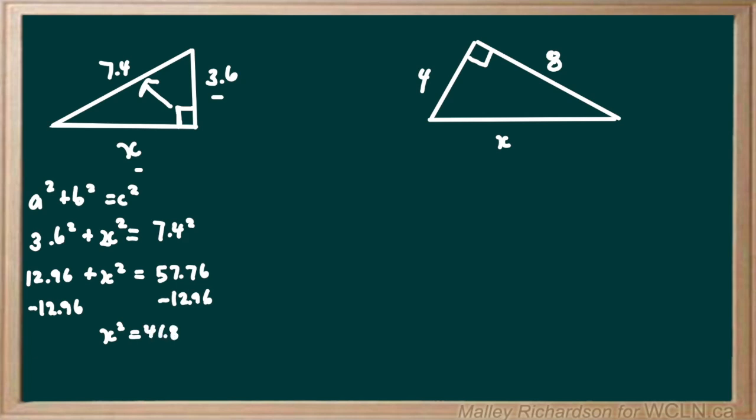Now we have to get rid of the square. Taking the square is the opposite of taking the square root, so we take the square root of both sides. We're left with x equaling the square root of 44.8, which gives us 6.47. So the side length of our unknown side is 6.47 meters.